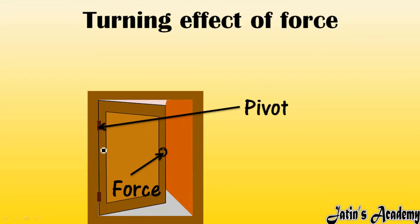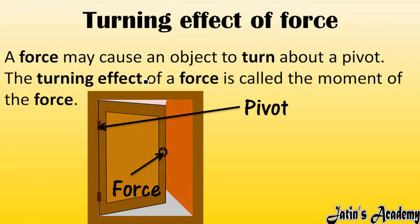Now let's see the definition. Definition: a force may cause an object to turn about a pivot. Whenever we are applying force to any object and that object starts turning about the fixed point, that is known as turning effect of force.